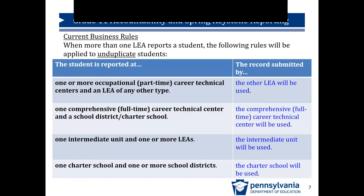When more than one LEA reports a student, business rules are applied to unduplicate students. If a student is reported by one or more occupational part-time CTCs and an LEA of any other type, the record submitted by the other LEA will be used, because it is the other LEA providing educational services for the subjects assessed. If a student is reported by a comprehensive full-time CTC and a school district or charter school, the comprehensive CTC's record will be used, because it is the comprehensive CTC providing the educational services for the subjects assessed.